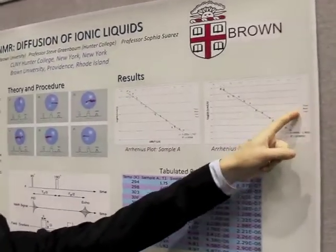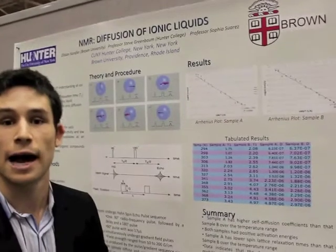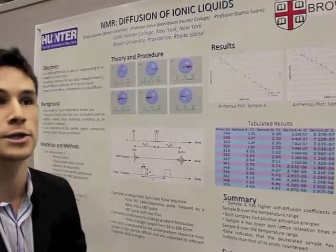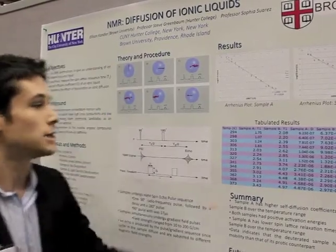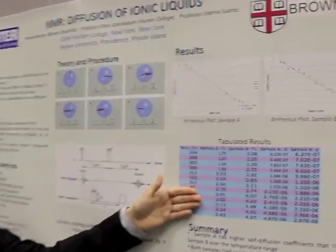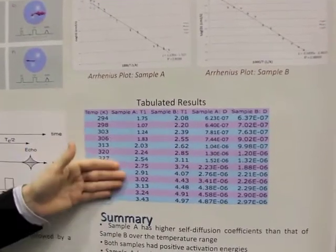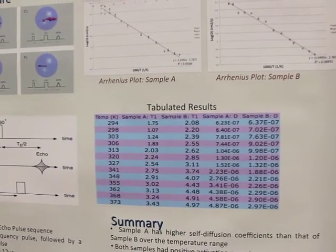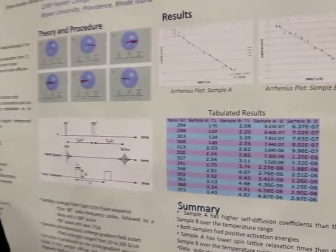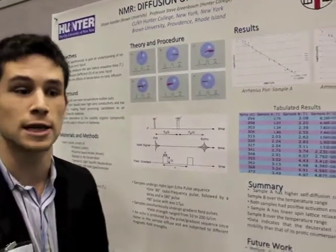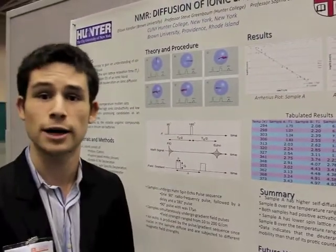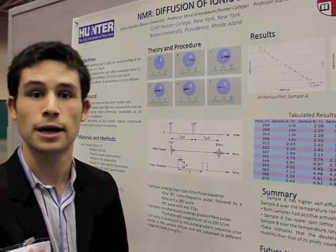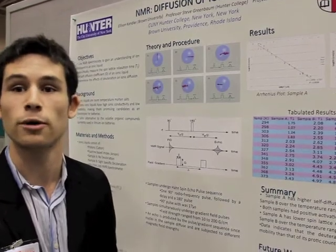The peaks here represent different protons in the sample. In this sample, you only have three, which means that at the site where that fourth one should be, you have a deuteron, which wasn't picked up because NMR is nuclei-specific. Sample A, which was the protonated sample, had lower T1 values but higher diffusion coefficients along the temperature range, both of which are indicators that this sample was more diffusive. You want to make your electrolyte as diffusive as possible in order to increase the efficiency of your battery, as well as to be able to draw more current from your battery.